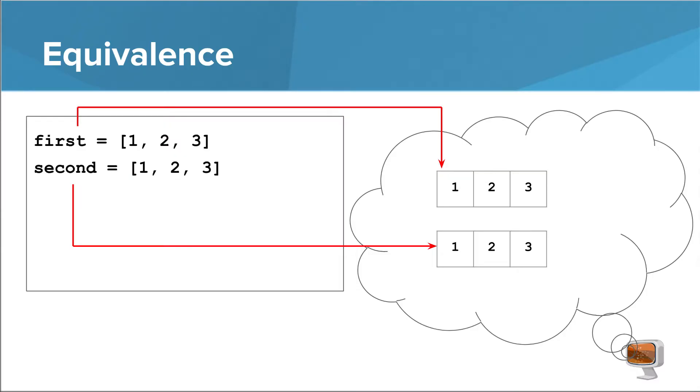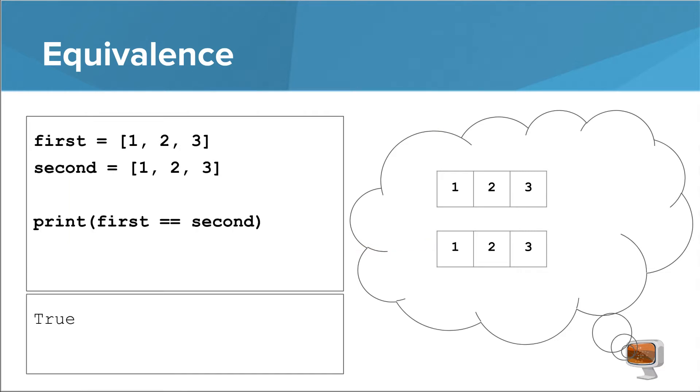Here are two lists, first and second. Though they have the same contents, they are actually different lists. They have independent destinies. We'll see exactly what that means in a second. Because they have the same contents, the equals equals operator will consider them to be equal. This type of equality is known as equivalence.